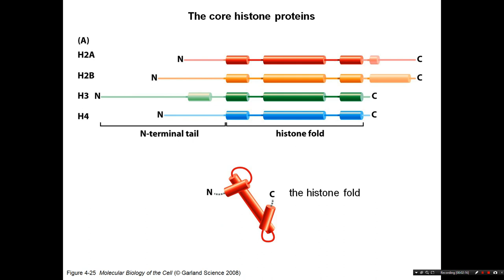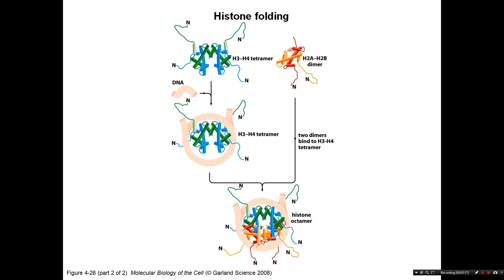Looking at the structures of those core histone proteins, they have a similar fold in the middle consisting of three alpha helices, which folds to form the histone fold. They also have N-terminal tails which are largely unstructured, and H2A and H2B have C-terminal tails as well.